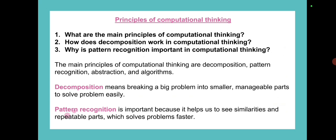Here you go. Topic is Principles of Computational Thinking. Question 1: What are the main principles of computational thinking? Question 2: How does decomposition work in computational thinking? Question 3: Why is pattern recognition important in computational thinking? So basically, decomposition, pattern recognition, and abstraction are properties of computational thinking. The main principles of computational thinking are decomposition, pattern recognition, abstraction, and algorithms.